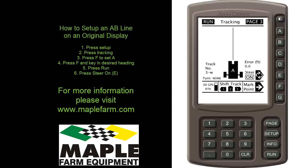Welcome to Maple Farm Equipment's how-to series on how to set up an original display auto track. What we will be guiding you through today is how to set up an AB line and turn steering on in a John Deere original display.